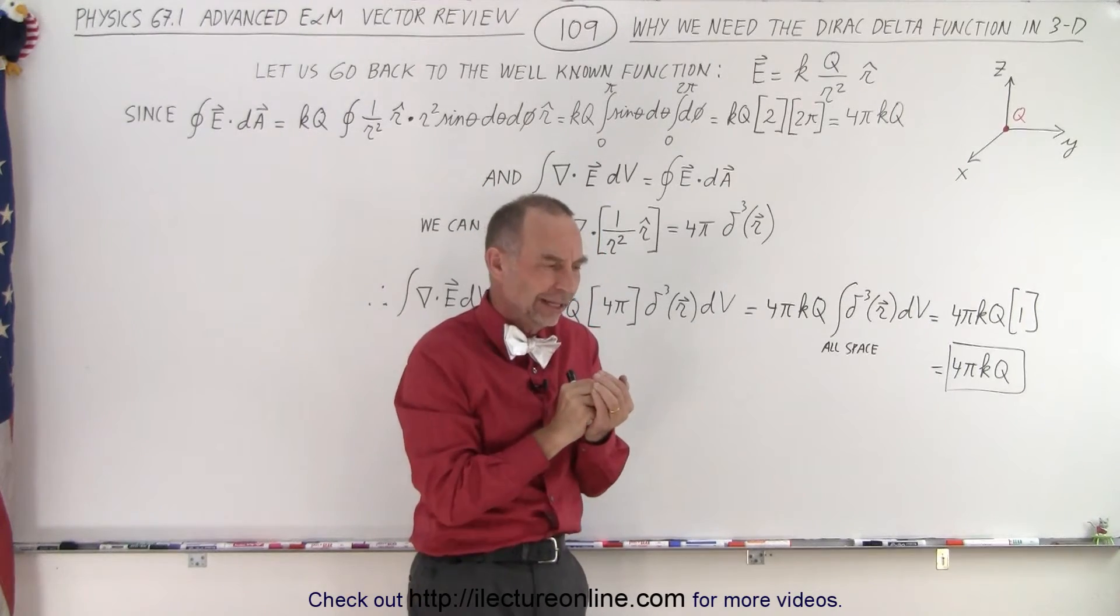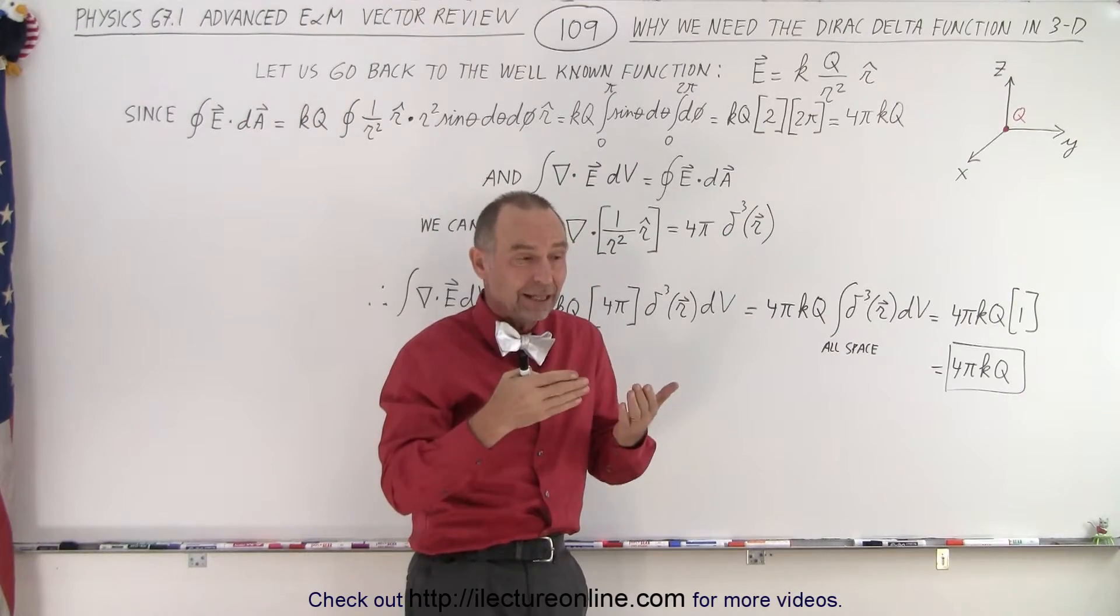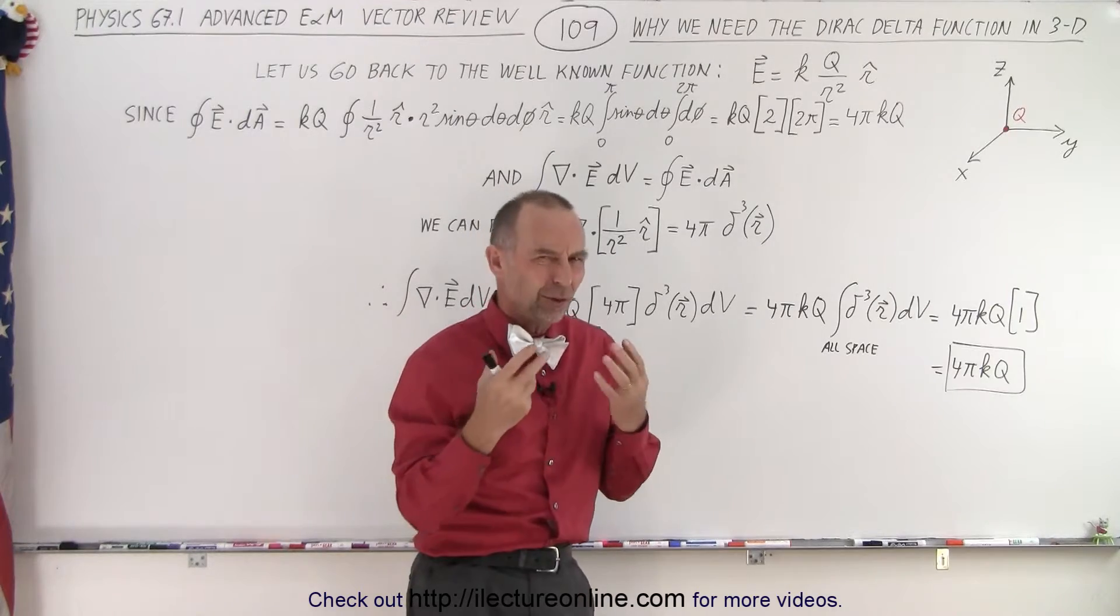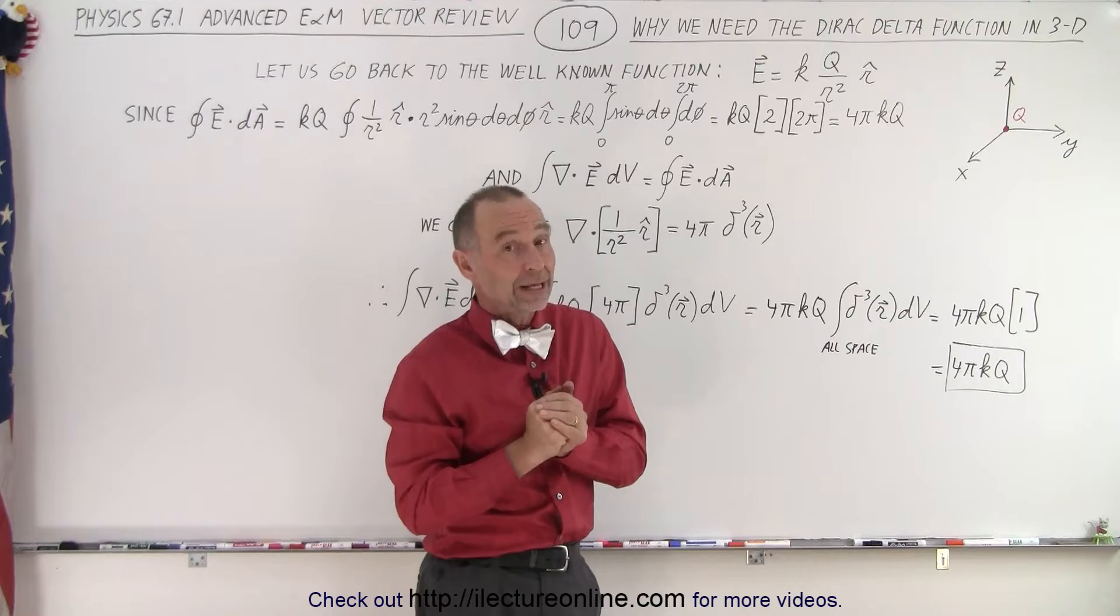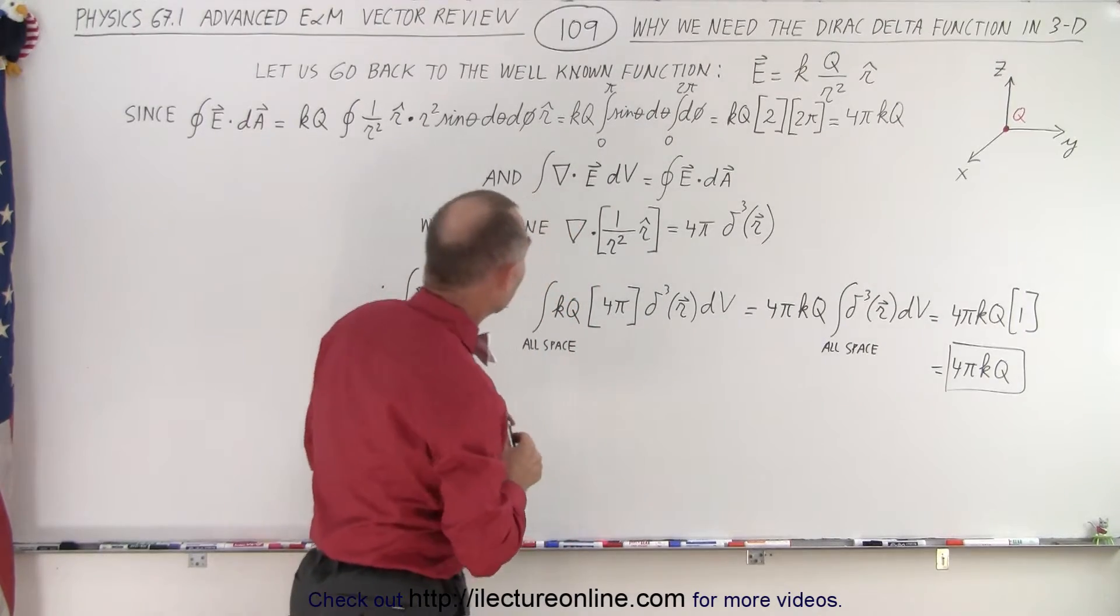It's a point charge and again we expressed in the past that there's a problem with the charge density which appears to be infinite at origin and zero everywhere else. So how do you really express that? The Dirac delta function right away comes to mind, especially in three dimensions. But now let's see why that is so important.